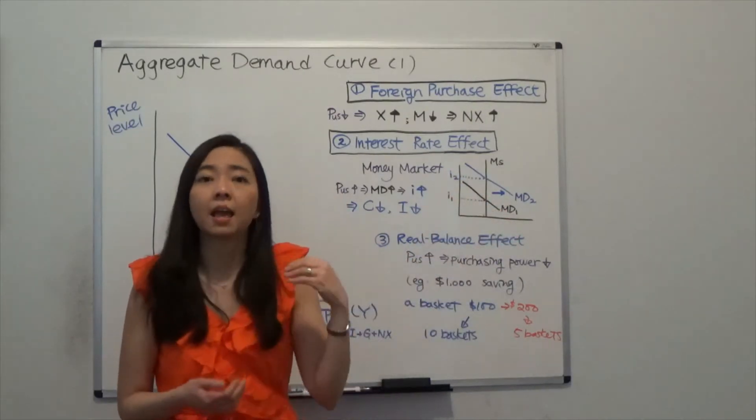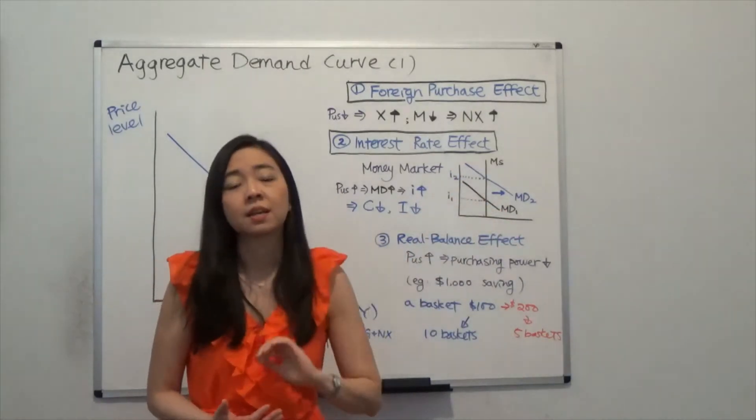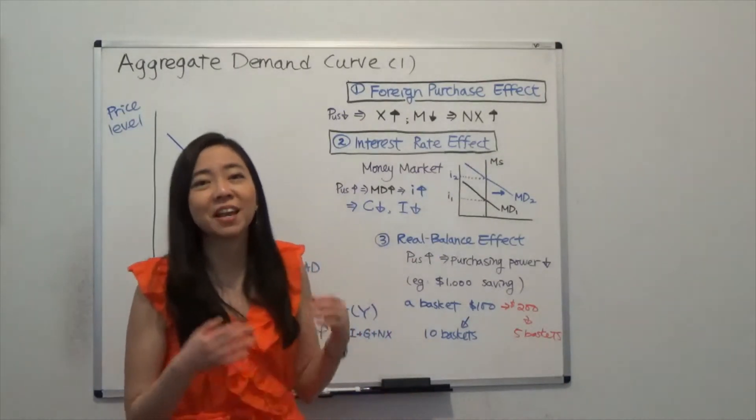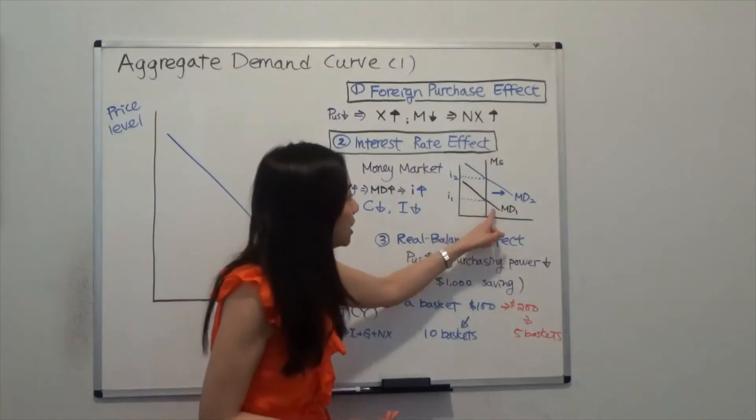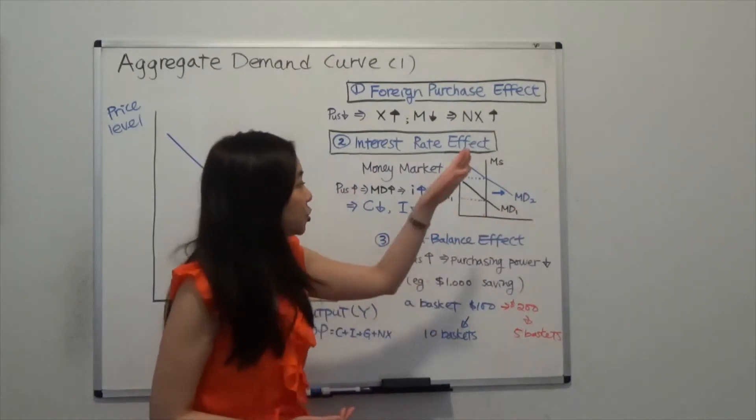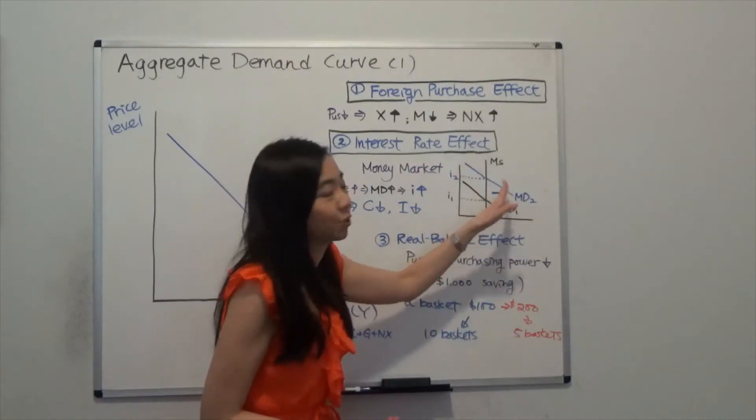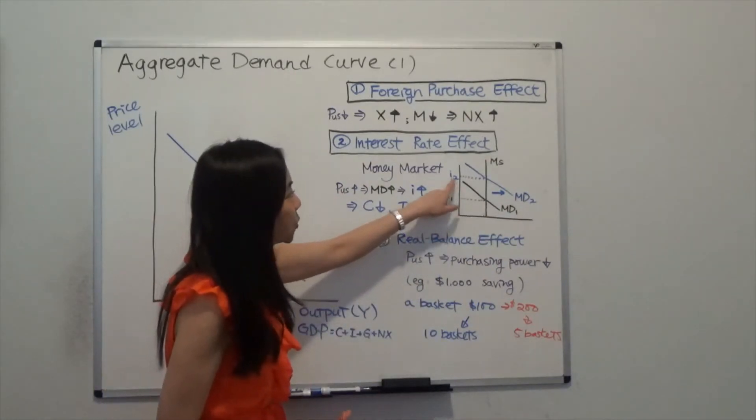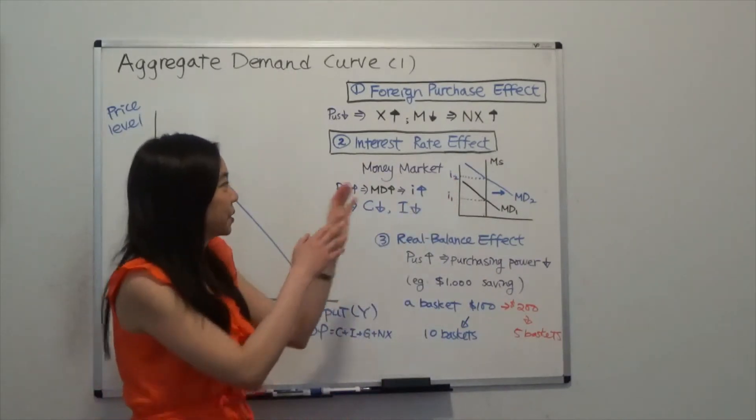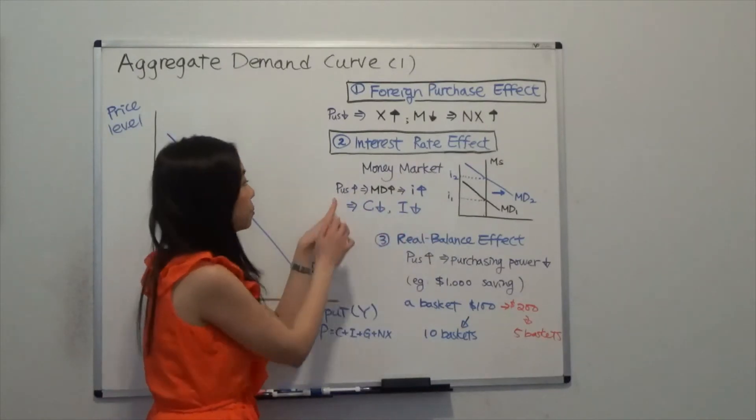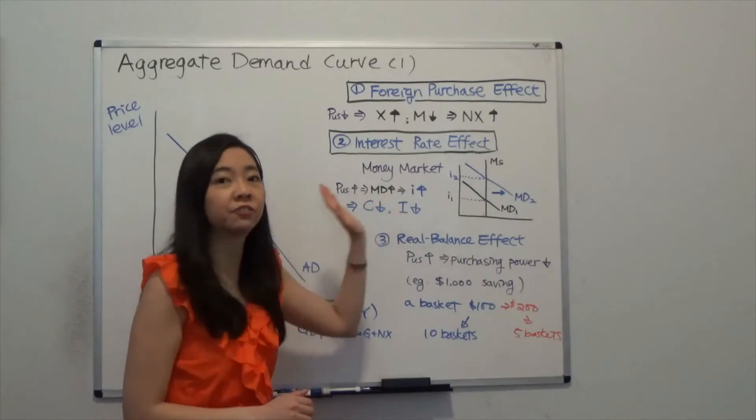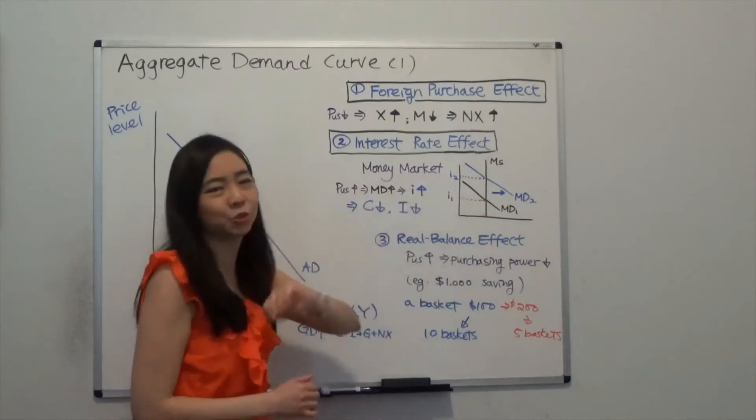You can see that our initial money demand is here. When the price level goes up, that means we need more money to carry all the transactions. Therefore, that is going to increase your money demand, shifting your money demand curve to the right. As a result, your equilibrium interest rate is going to go up. So going back to our price level: price level goes up, money demand curve shifts to the right, and your interest rate goes up.